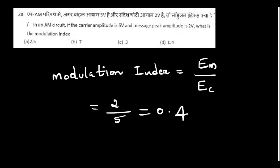In an AM circuit, if the carrier amplitude is 5 volts and message peak amplitude is 2 volts, what is the modulation index? We can easily take 0.4, because in AM modulation the value has to be 0 to 1.